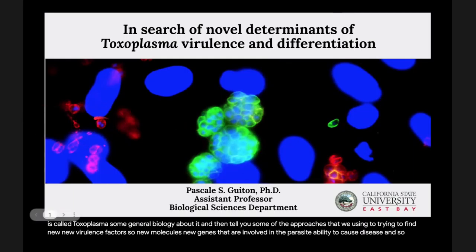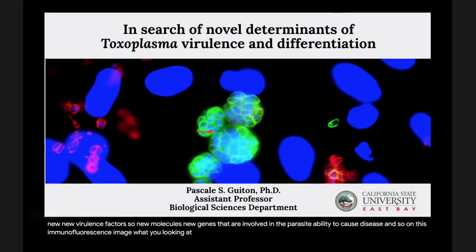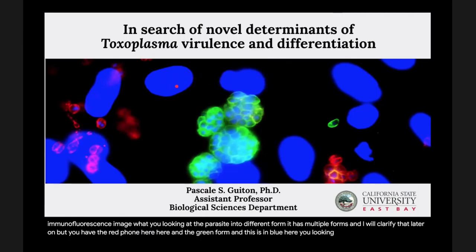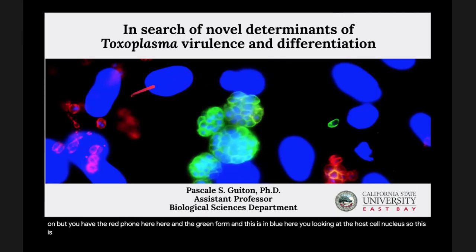On this immunofluorescence image, what you're looking at are the parasite in two different forms. It has multiple forms and I will clarify that later on, but you have the red form here and the green form, and in blue here you're looking at the host cell nucleus. This is a monolayer of human cells infected with the parasites.